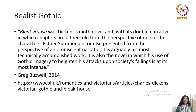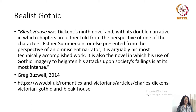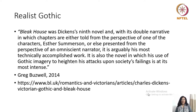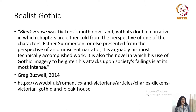Bleak House was Dickens's ninth novel and with its double narrative, in which chapters are either told from the perspective of one of the characters, Esther Somersen, or else presented from the perspective of an omniscient narrator, it is arguably his most technically accomplished work. It is also the novel in which his use of Gothic imagery to heighten his attacks upon society's failings is at its most intense.